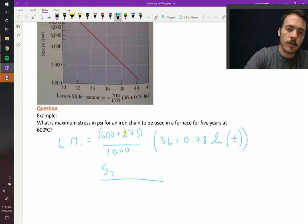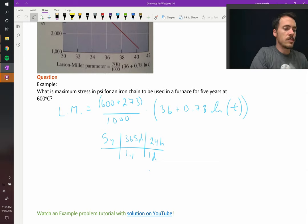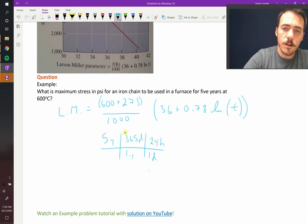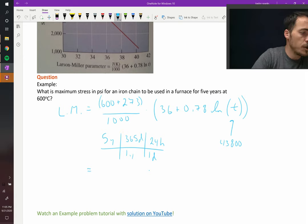Five years: in one year there are 365 days, in one day there are 24 hours. So when we plug this all in, we find that it's 43,800 hours for time. When I plug this in for Larson-Miller parameter, I find that it's 38.7.